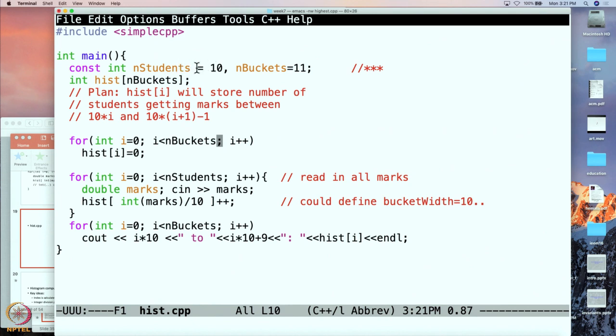nStudents is going to represent how many students there are, and therefore in the rest of the code, nStudents will show that this number is actually representing the number of students. Then there are nBuckets, which is going to be 11 because we wanted 11 buckets. We declare an array with 11 buckets, and this is the plan that we already had.